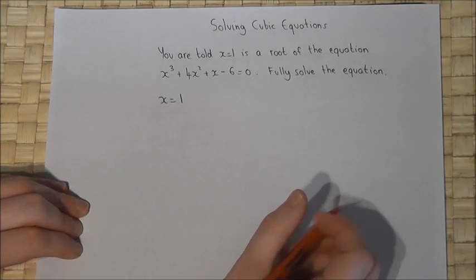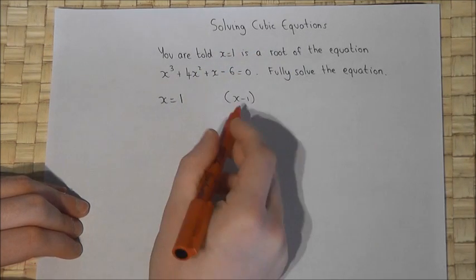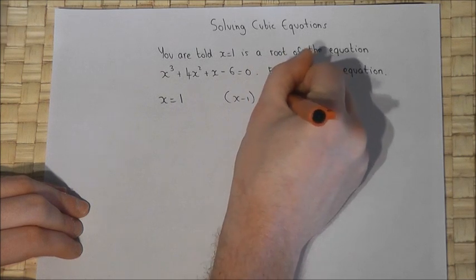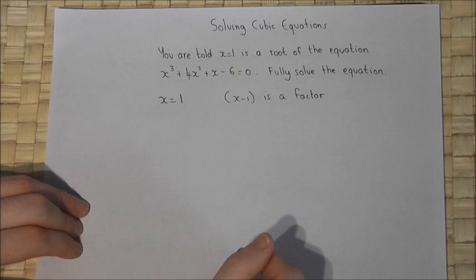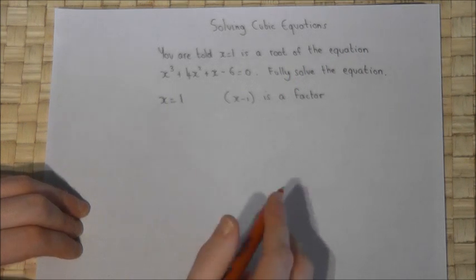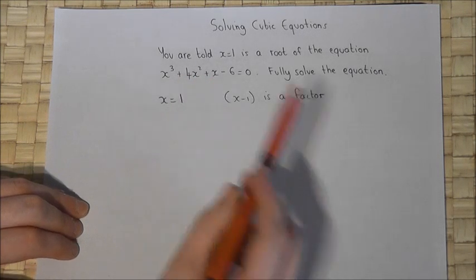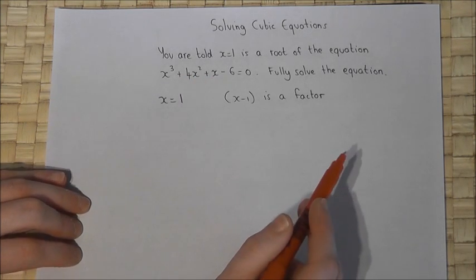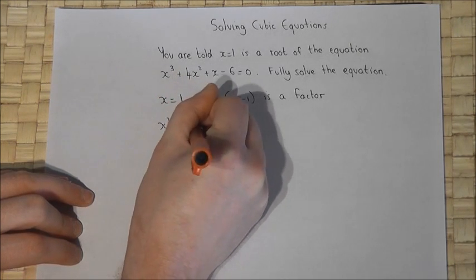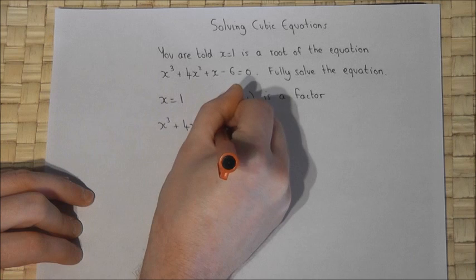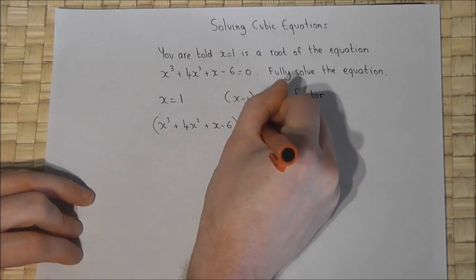So x equals 1 is a root, which implies that x minus 1 is a factor. To solve the equation fully requires us to find the other factors of this equation. To find the other factors, we have to work out x cubed plus 4x squared plus x minus 6 divided by the known factor.